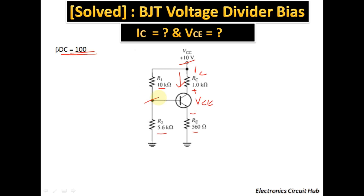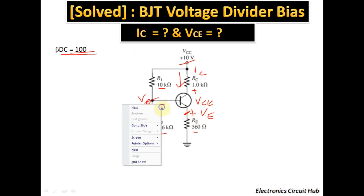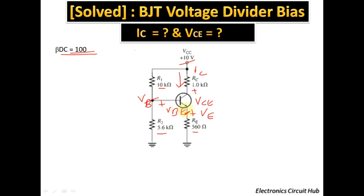You can see there is a node here. The voltage at this node is called VB. There is a voltage drop across the emitter resistance RE, and the voltage across the base-to-emitter junction is VBE. In Step 1, we need to find the input resistance looking into the base, called R_in(base).